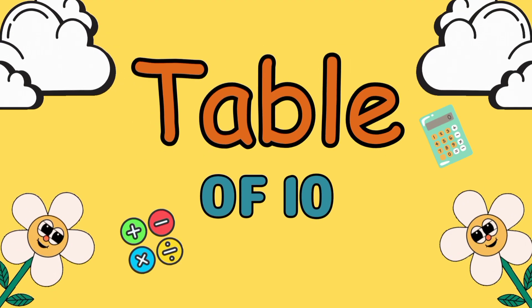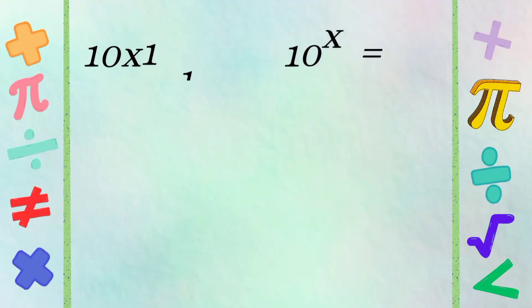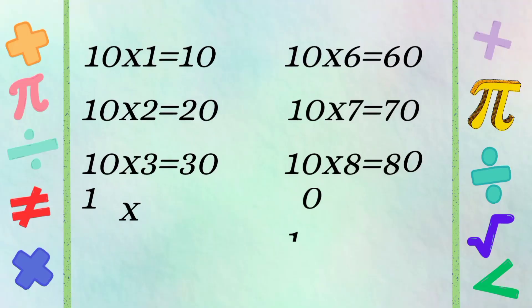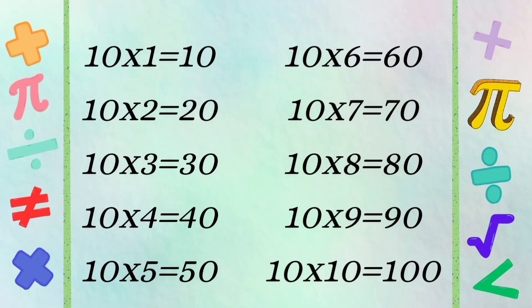Table of 10: 10 1s are 10, 10 2s are 20, 10 3s are 30, 10 4s are 40, 10 5s are 50, 10 6s are 60, 10 7s are 70, 10 8s are 80, 10 9s are 90, 10 10 is 100.